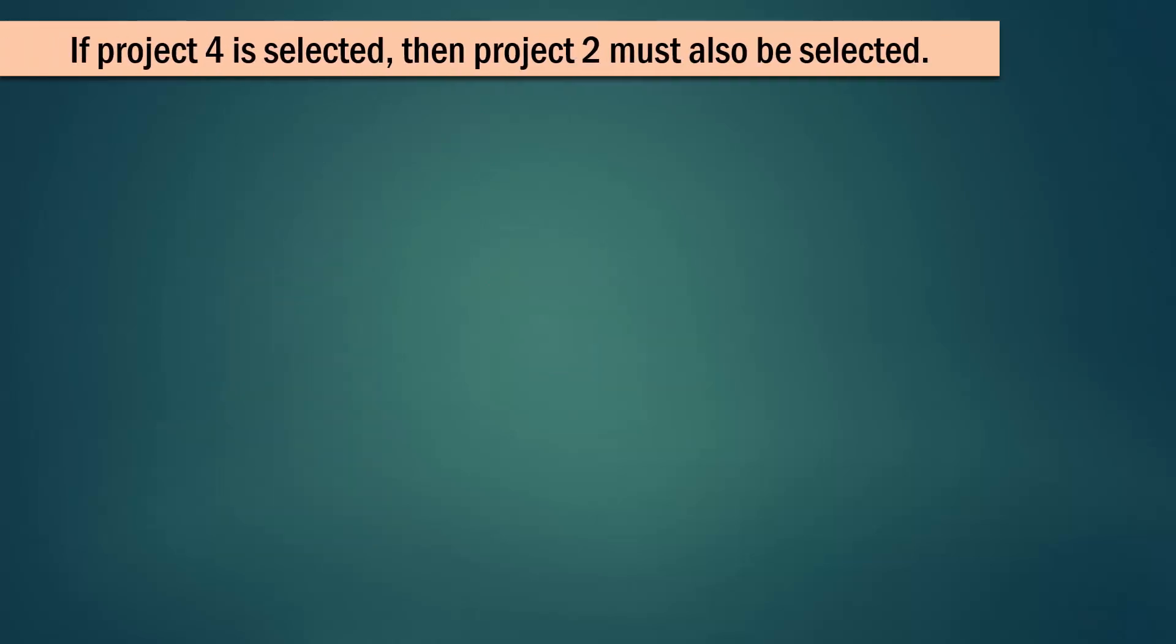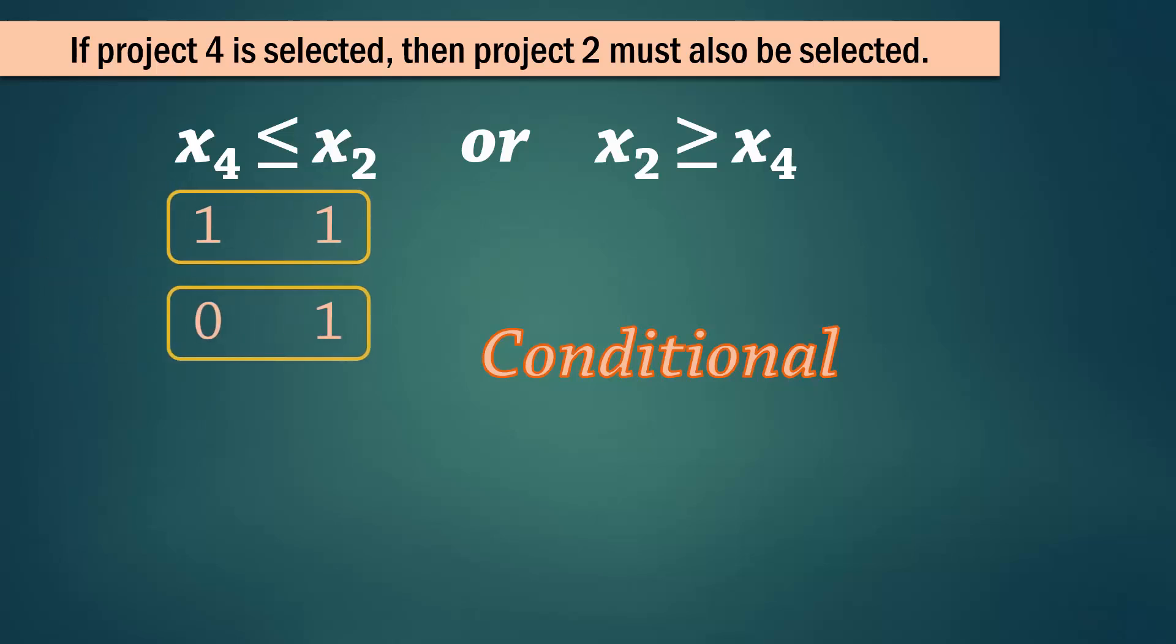Next, if project 4 is selected, then project 2 must also be selected. That is, project 4 is contingent on project 2. And since 4 depends on 2, we write x4 less than or equal to x2, or x2 greater or equal to x4. This is called a conditional or contingent constraint. Think of it as needing to take a prerequisite course 2 before being allowed to take course 4. You can take 4 if you have 2. You can take 2 without 4. You can take neither 2 nor 4. But you cannot take 4 without 2. This is also written as x4 minus x2 less than or equal to 0.